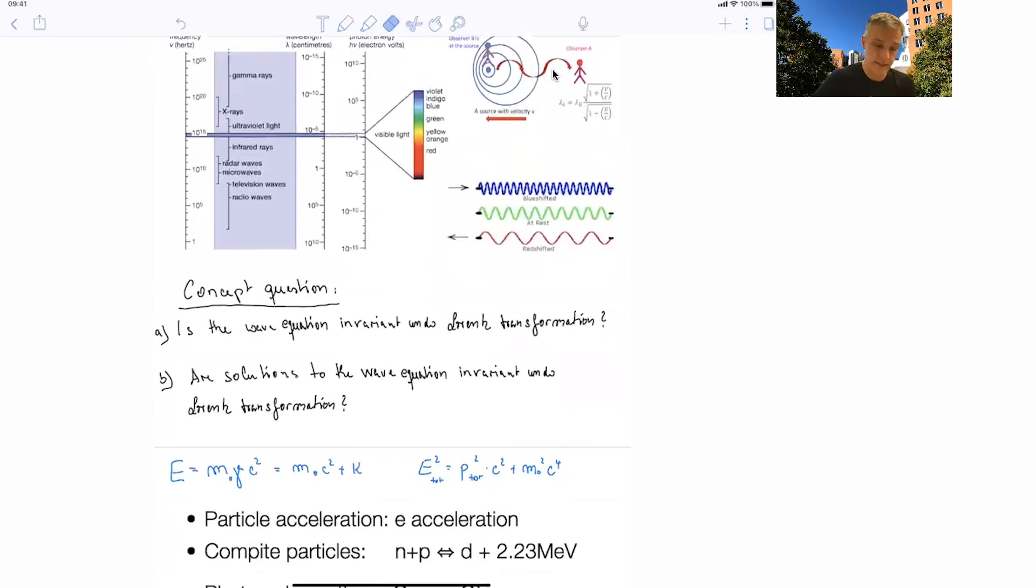And the answers are yes and no. The wave equation is invariant. The wave equation describes the physics. It explains how electromagnetic fields change. And the laws of physics need to be invariant in the Lorentz transformation. Otherwise, they will not be valid. We will violate the postulate we just made that all reference frames are equal to each other.